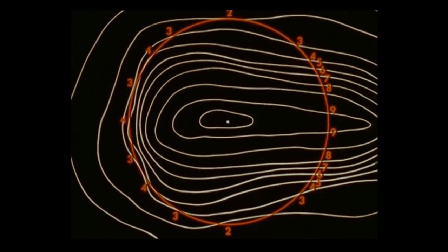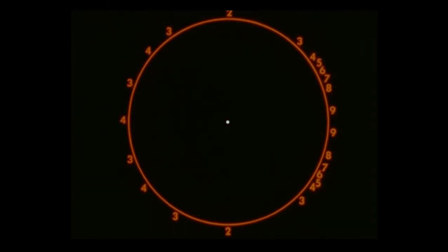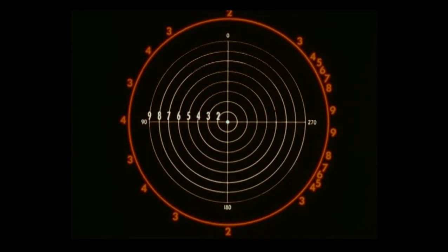We now use a vectorial presentation to give each reading a magnitude and direction. To plot this, we use a scale of circles. Along this line, the field strength on the selected radius is 3, so we cut the line at the circle representing strength 3.